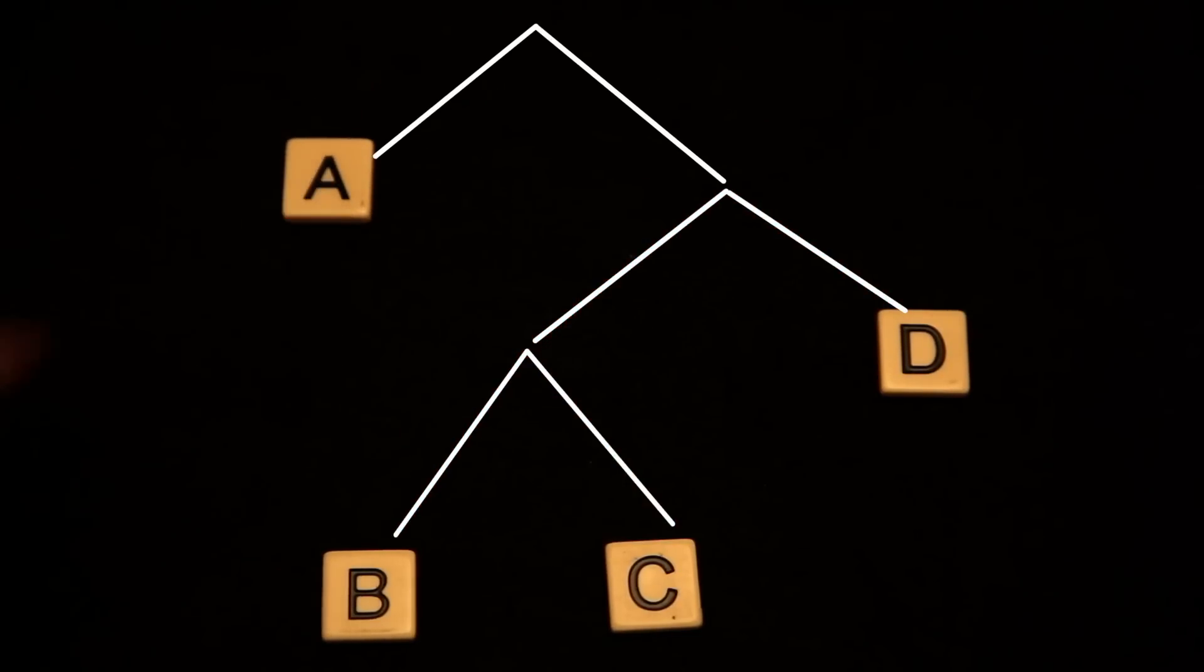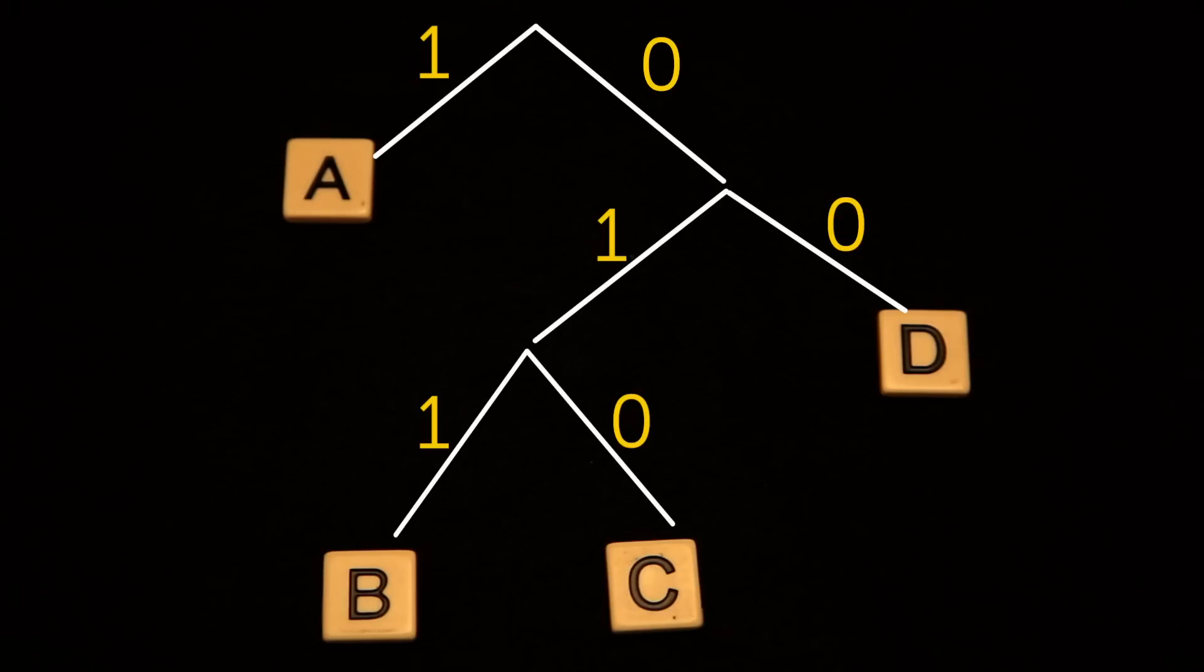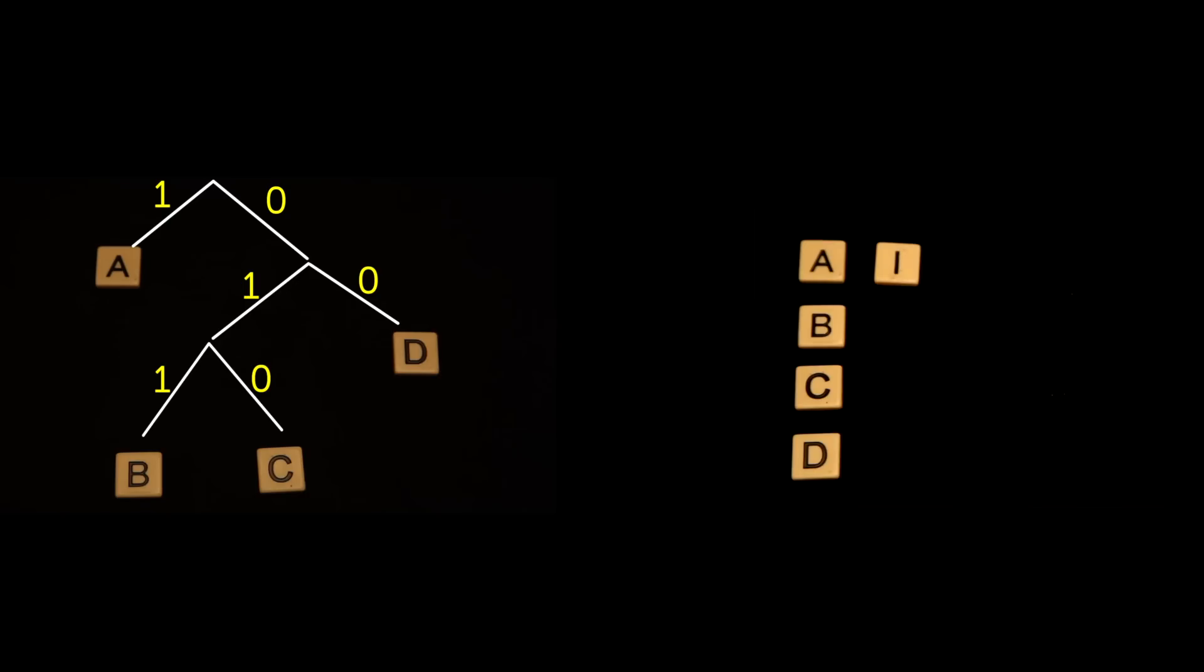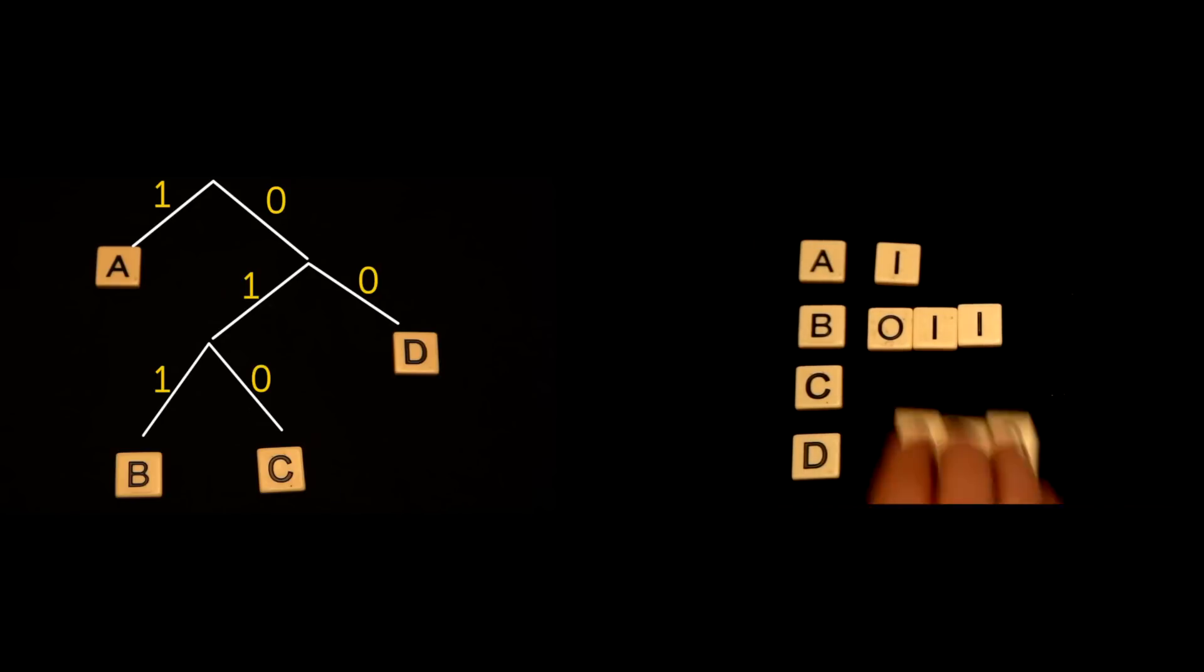Finally, we label the edges in this tree with 0 or 1 in any order. Now the code for each letter is just the path from the top of the tree to the given letter. So for A, it's just one edge, or 1.